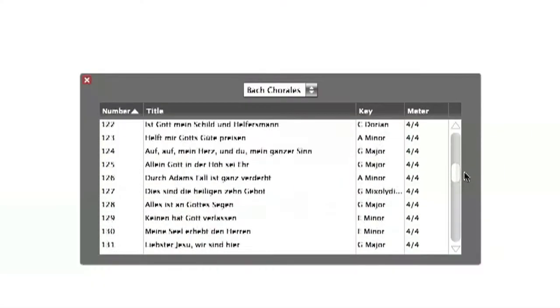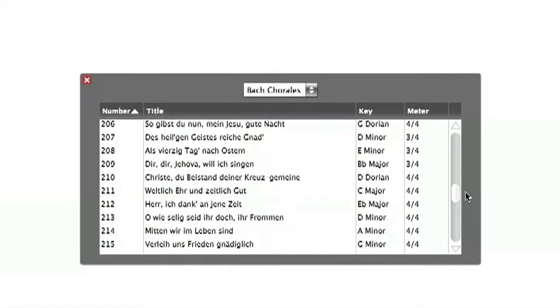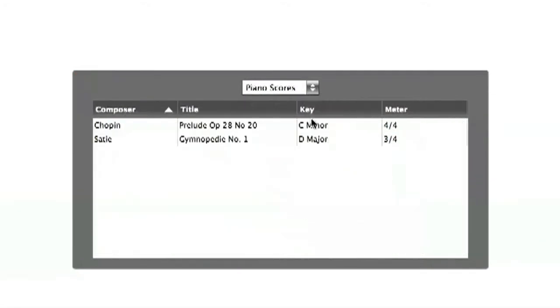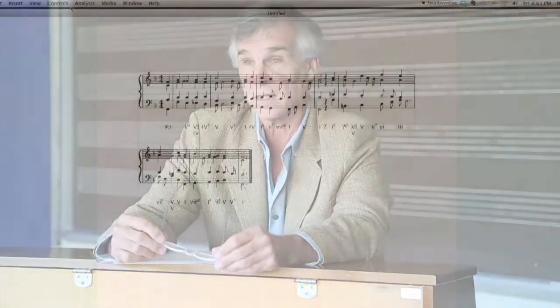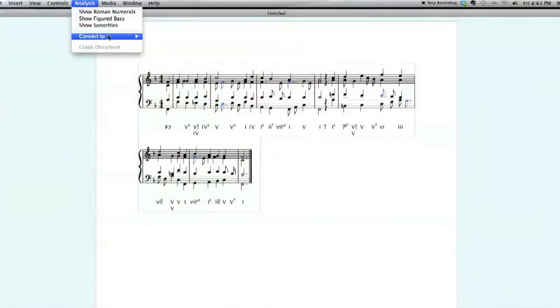Harmonia comes with the complete Bach chorales built in. Students and teachers can bring their own scores into Harmonia to analyze and markup and turn into exercises, whatever they want to do. It's ready to be used for practicing analysis and short compositional assignments.